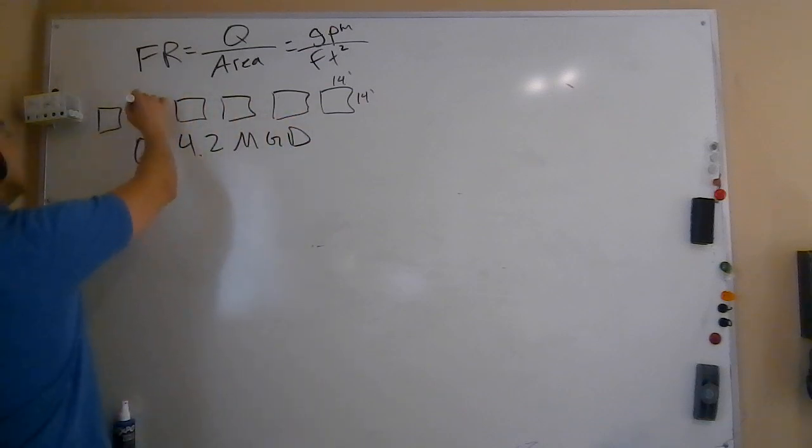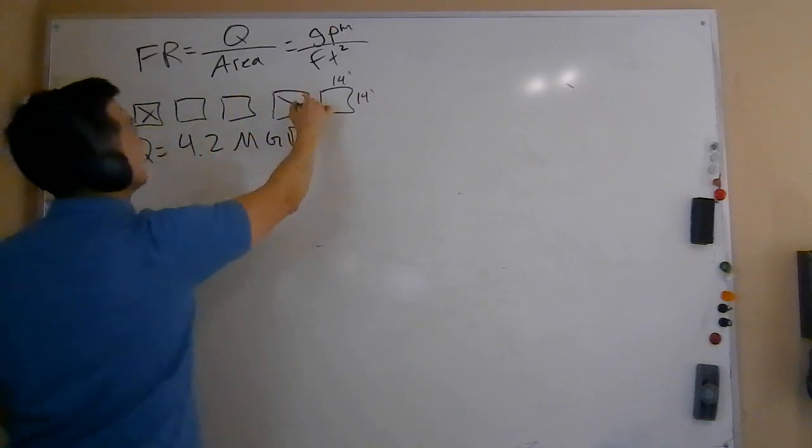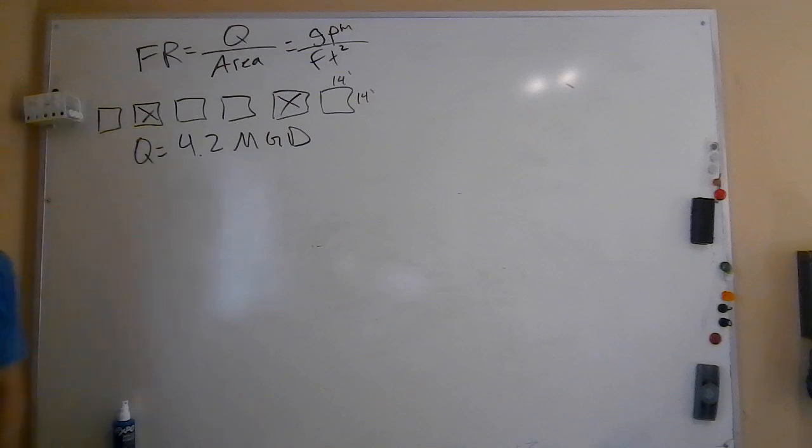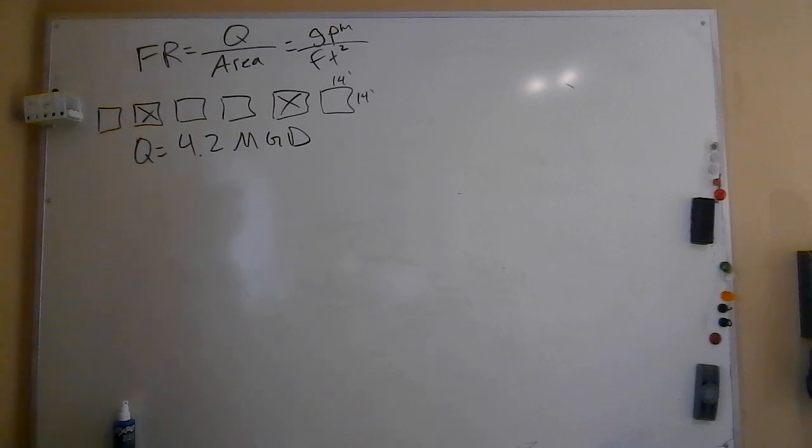Now, right now of the six filters, we have filters two and five offline, whether it's for repairs, routine maintenance, changing filter media, or maybe we just don't need it to treat the size flow that we've got coming in on average right now this time of the year. Either way, we've got four of these filters that are treating this total flow rate of 4.2 million gallons per day. We want to calculate what is the filtration rate across the board here, at least on average amongst the four filters.